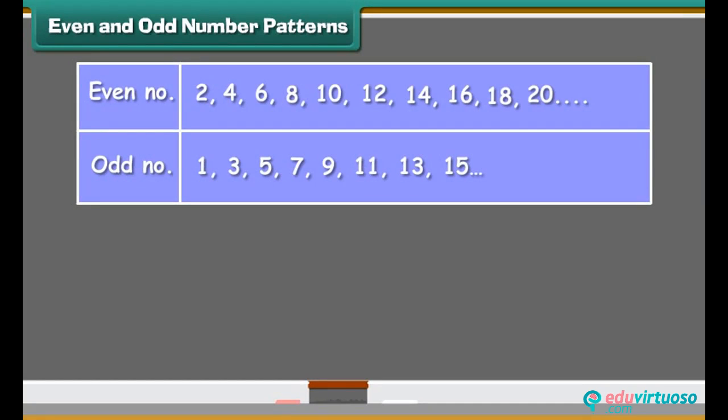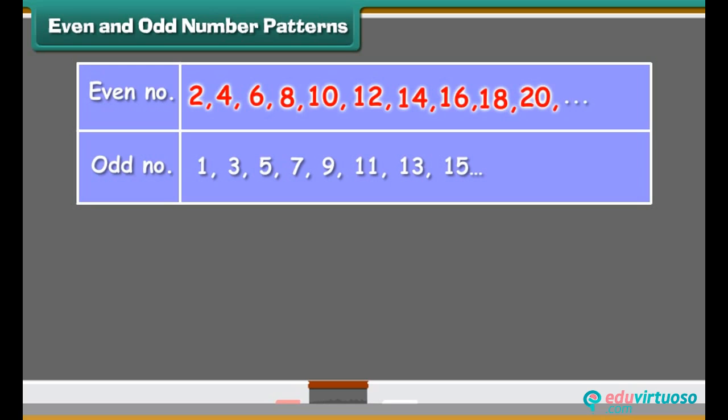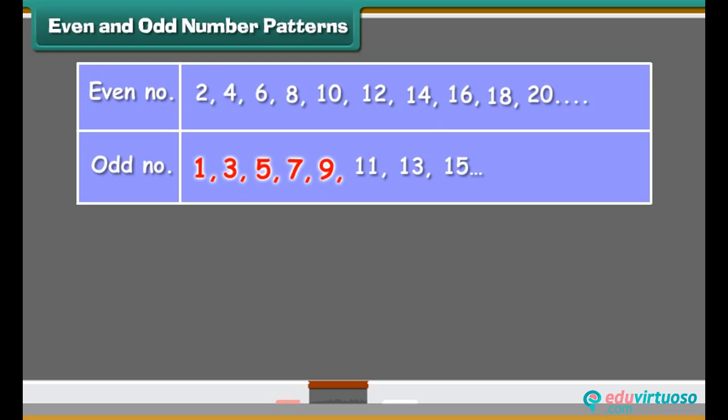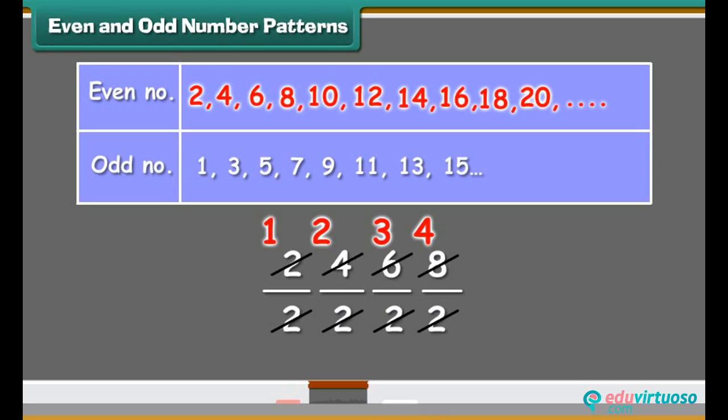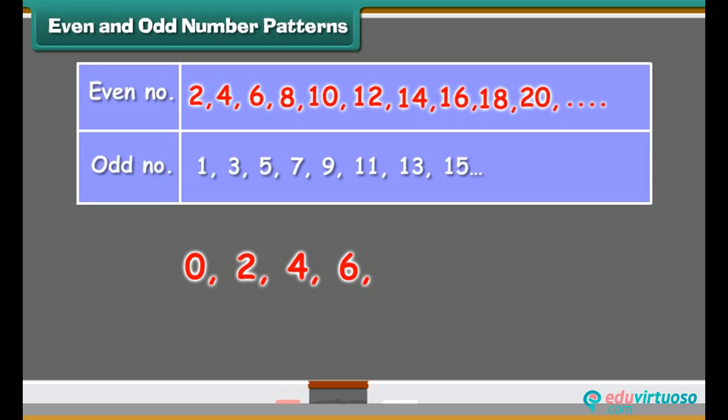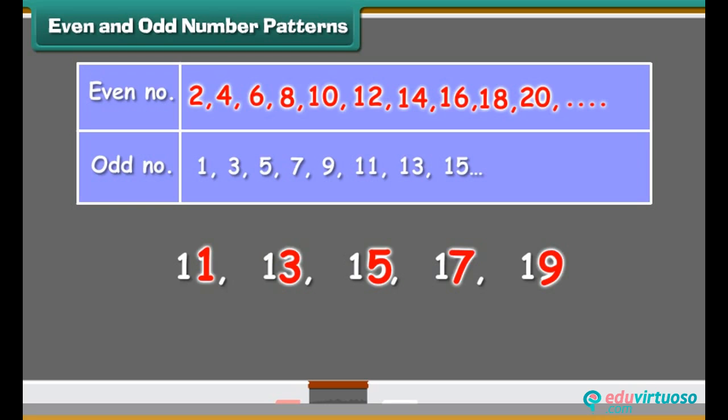Look at the numbers given here: 2, 4, 6, 8, 10, 12, 14, 16, 18, 20 and so on. 1, 3, 5, 7, 9, 11, 13, 15 and so on. The first series are called even numbers. Even numbers are divisible by 2 and end with 0, 2, 4, 6, and 8. Numbers ending with 1, 3, 5, 7, and 9 are called odd numbers. In both even and odd numbers, we skip count by 2s.